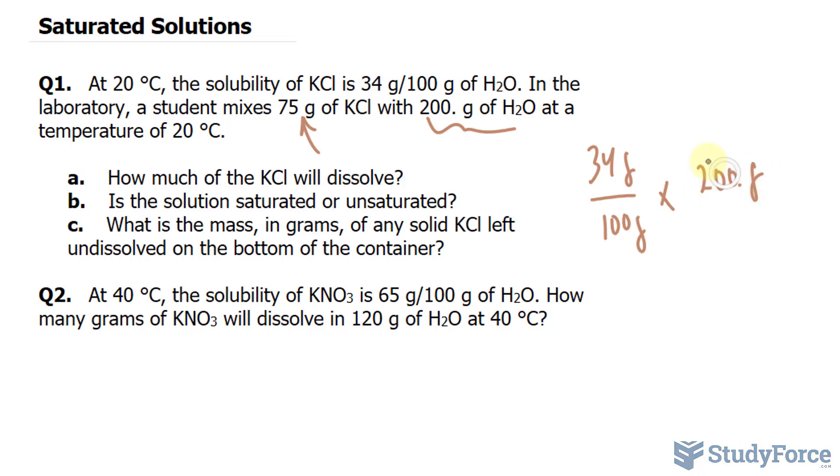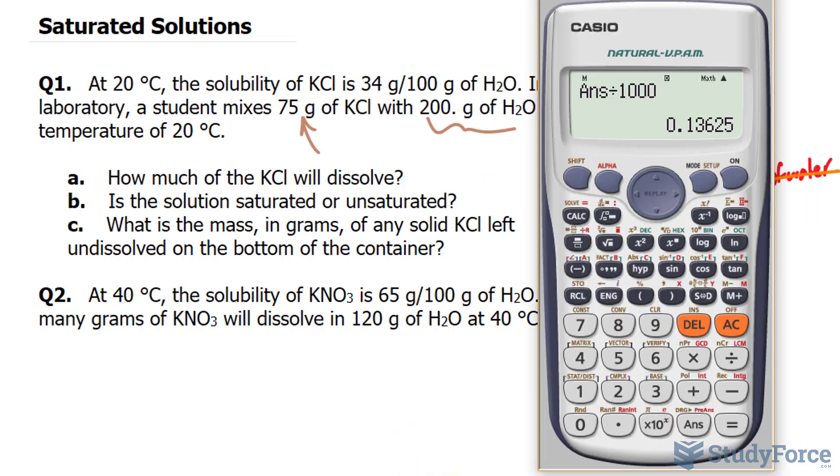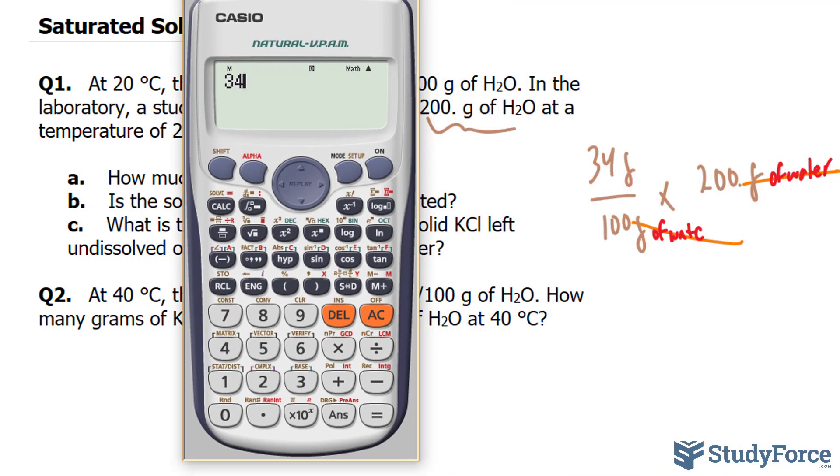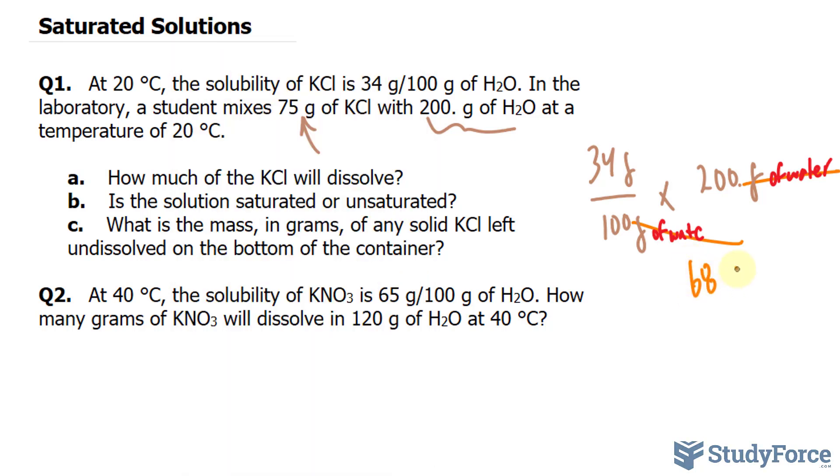And we're placing a dot here to signify that all three of these numbers are significant. The grams of water, this is grams of water, and this is grams of water. The units here will cancel out. So what we end up with is 34 times 200 divided by 100, and that's 68.